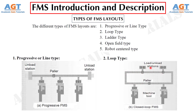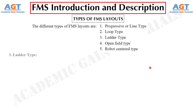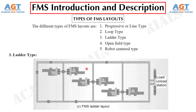In the ladder type FMS layout, the configuration is as shown in figure C. The loading and unloading station is typically located at the same end. The transfer of parts from one machine tool to another is in the form of ladder steps as shown in this figure.